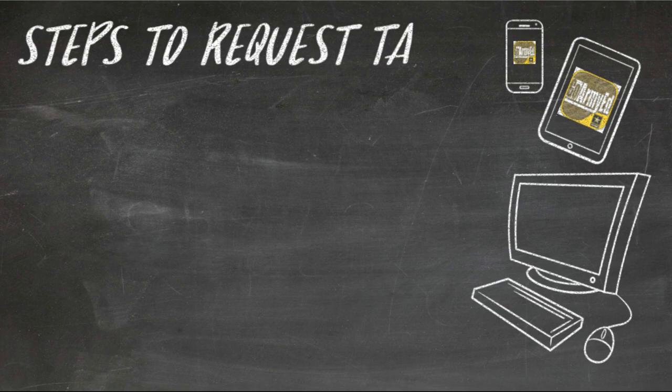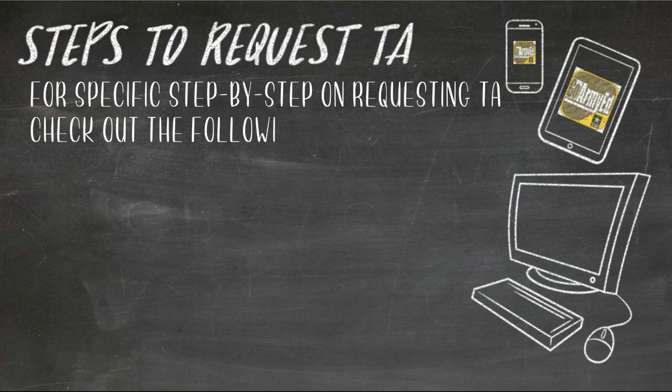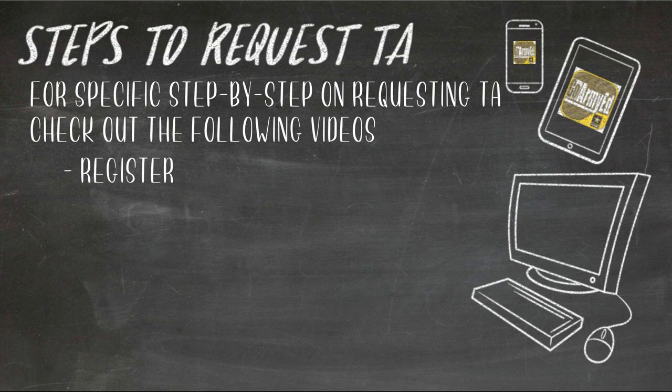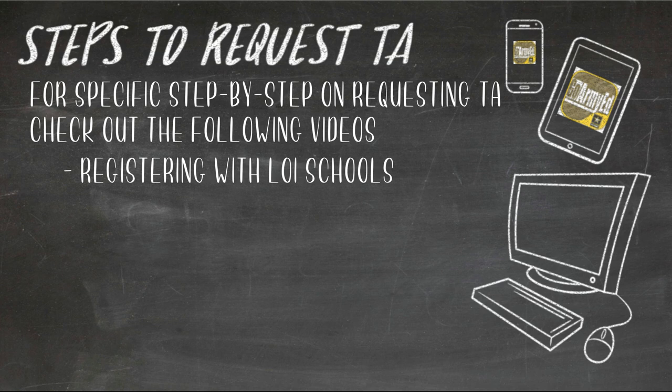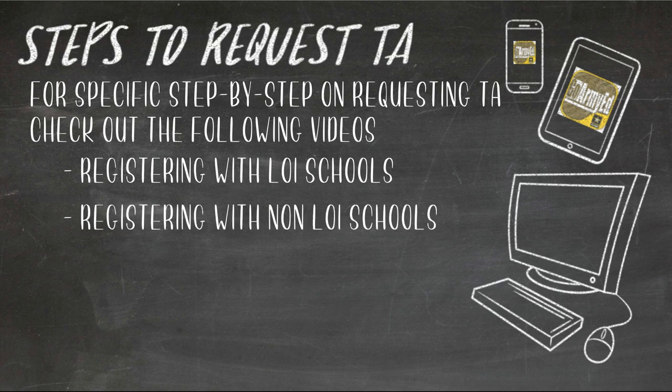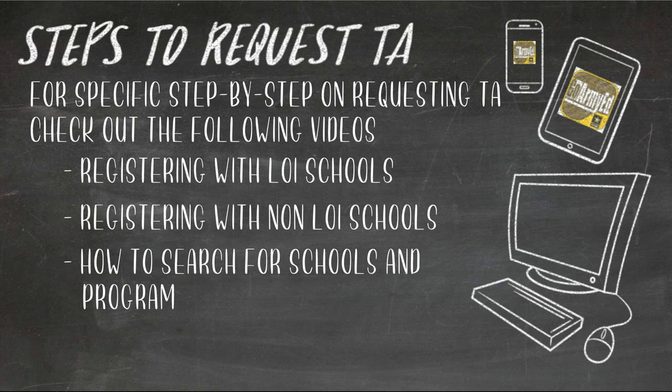There are two different processes to request TA, so instead of one long video, the steps are shared in separate videos. When you are ready to register and are attending an LOI school, visit the 'Registering with LOI School' video. If you are going to a non-LOI school, visit 'Registering with Non-LOI Schools.' To find out whether your school is an LOI or non-LOI school, watch the video titled 'How to Search for Schools and Programs.' Links for these videos will be in the description.